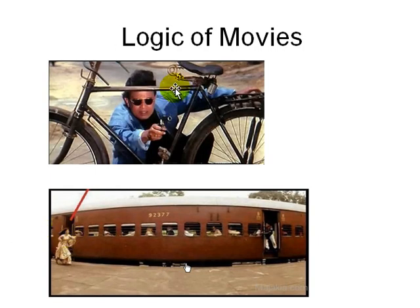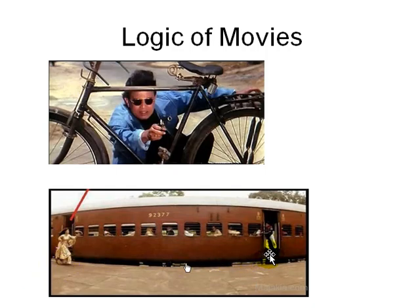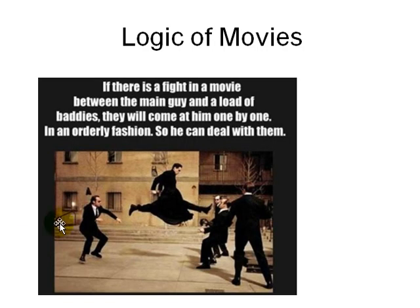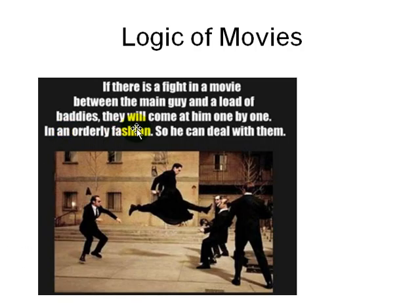Here is the logic of movies. In a movie, a guy hiding behind a bicycle is shooting. A girl runs to catch a train when she could easily get into the same compartment from the other door. In a Matrix-style fight scene, a crowd of bad guys comes at the hero one by one in an orderly fashion so he can kick them individually. These are examples of movie logic that doesn't hold up to scrutiny.